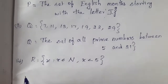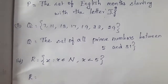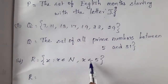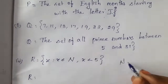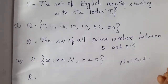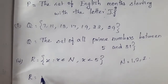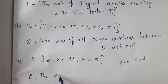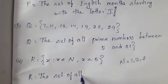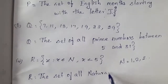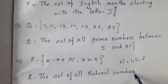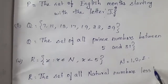Set R = {x | x ∈ ℕ, x < 5}. Natural numbers start from 1, 2, 3, ... — all positive numbers. So in descriptive form: R = the set of all natural numbers less than 5.